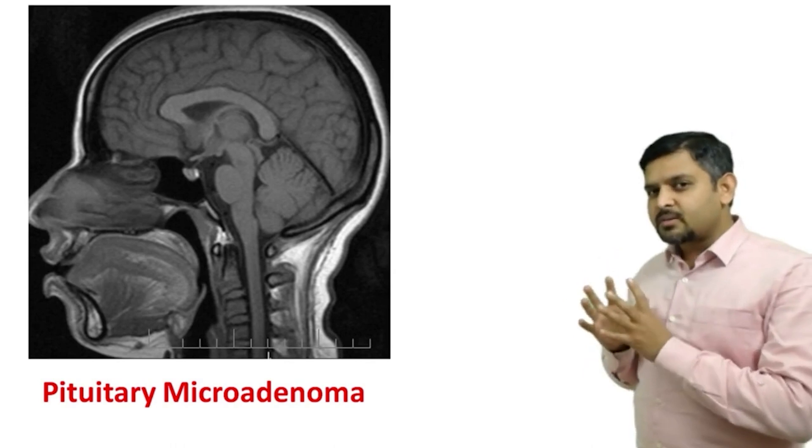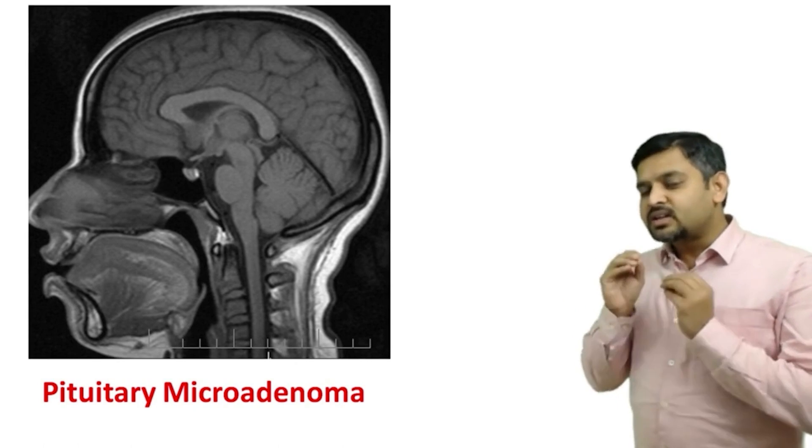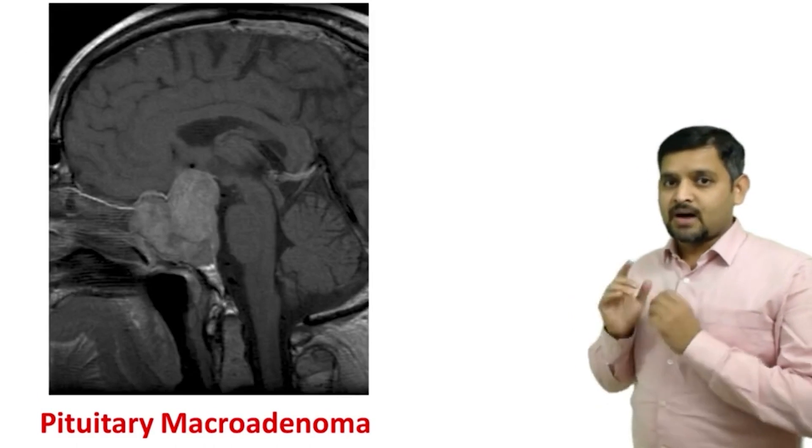If you see a pituitary which is normally appearing with a small functional mass less than 1 cm seen on dynamic MRI, think of a pituitary microadenoma.